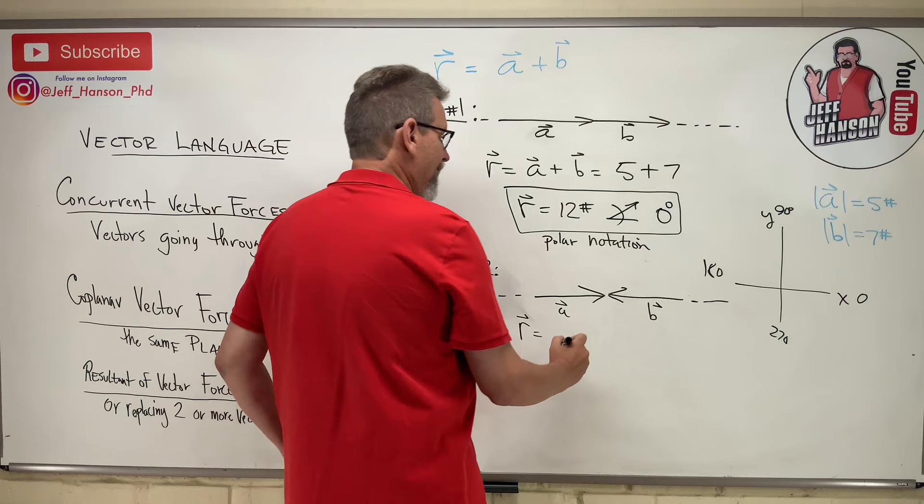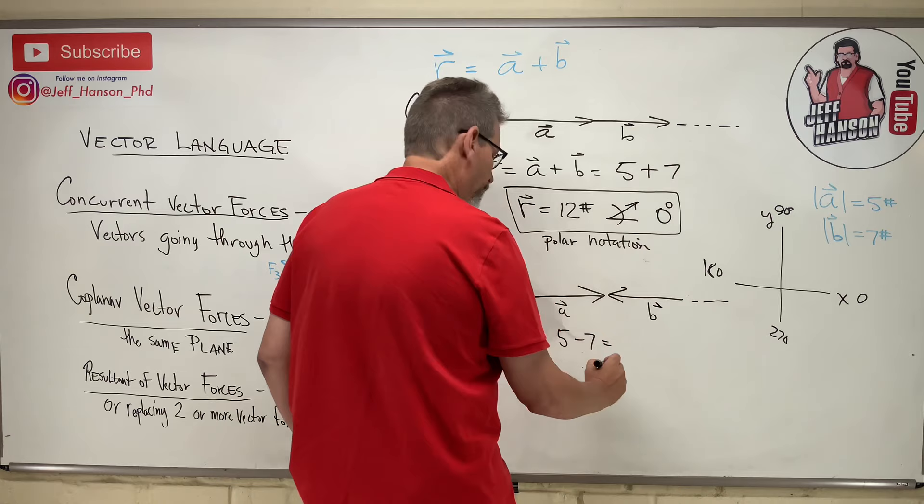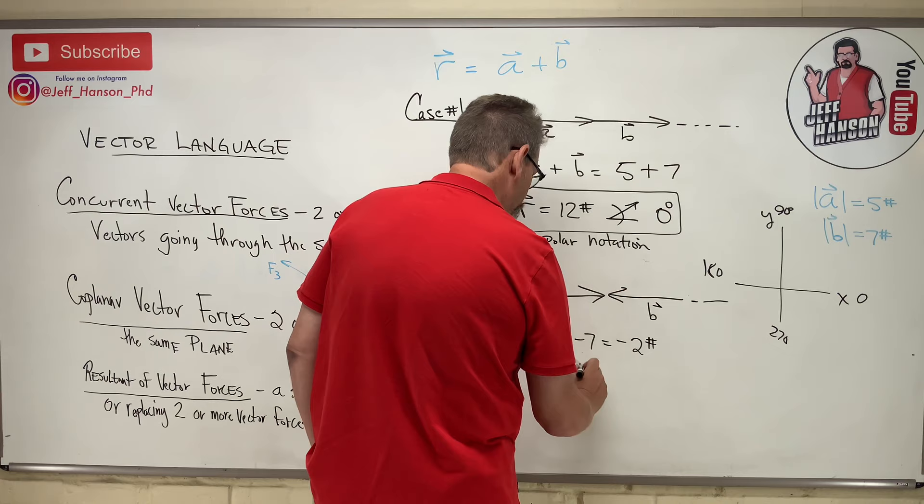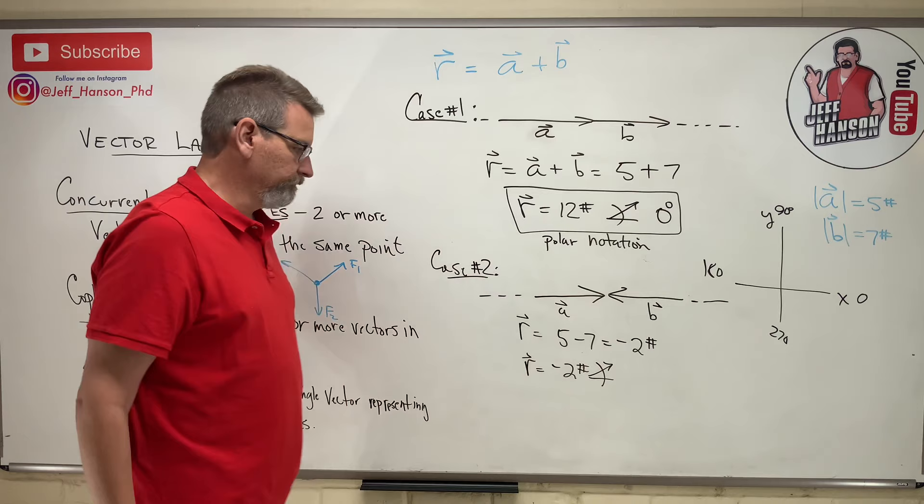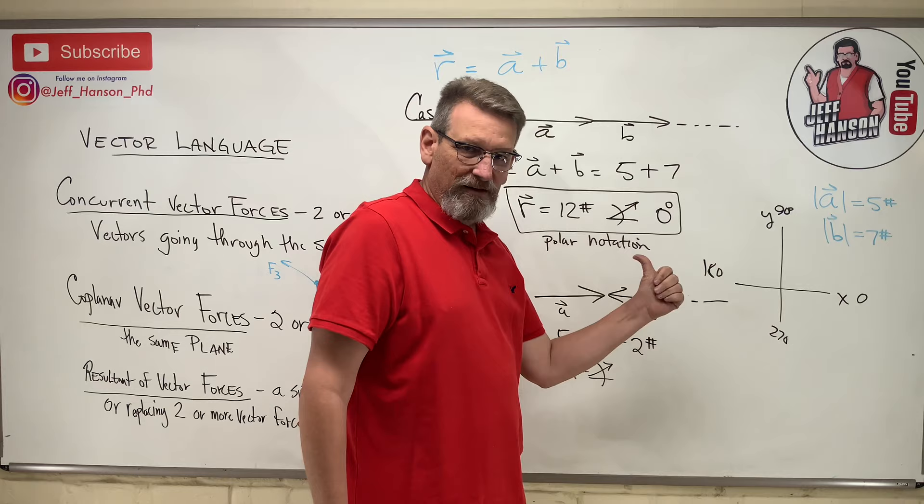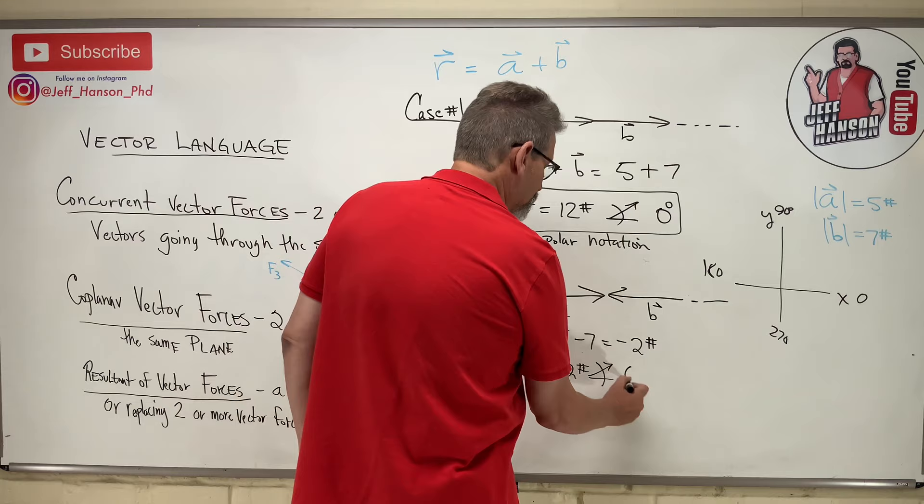So actually, this time, it's going to be A, which is five minus seven, which is five minus seven is minus two pounds. So vector R is equal to minus two pounds, ooh, not a vector, at an angle of, okay, now what? Uh-oh, what now? Here's your choices. It's negative two. Is it zero, or is it 180? I don't know. It is, I'm telling you, it's zero.